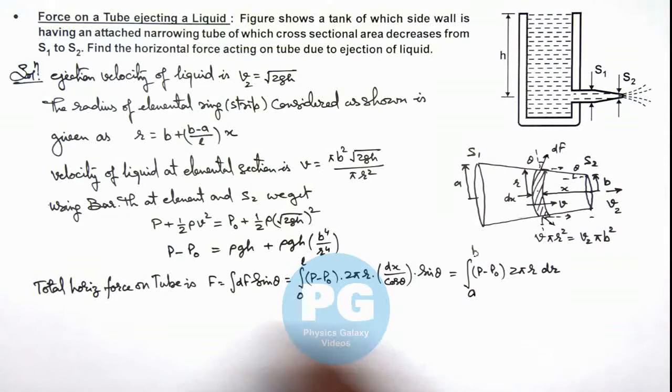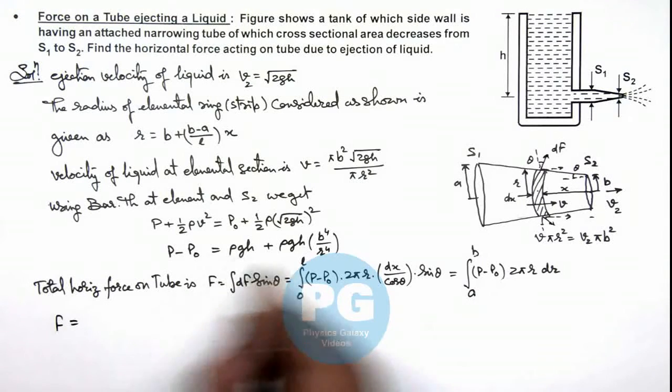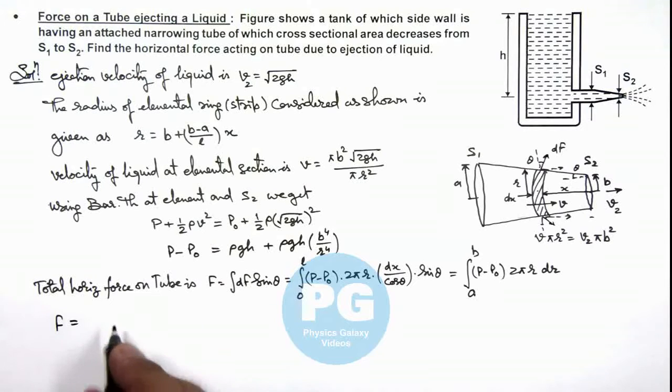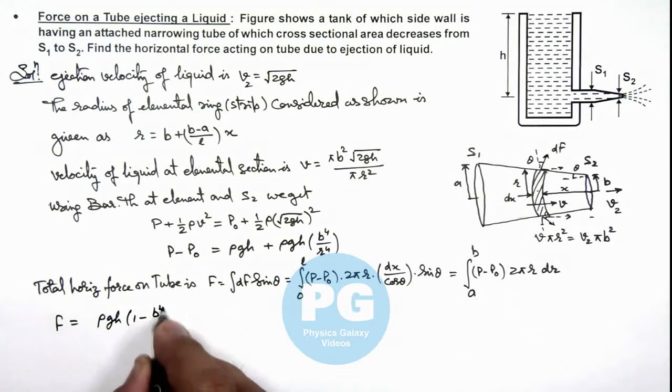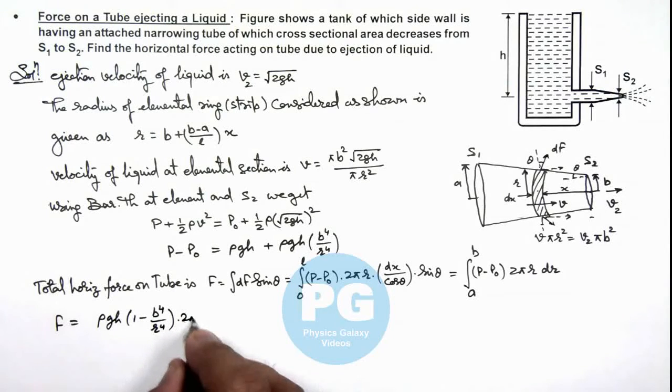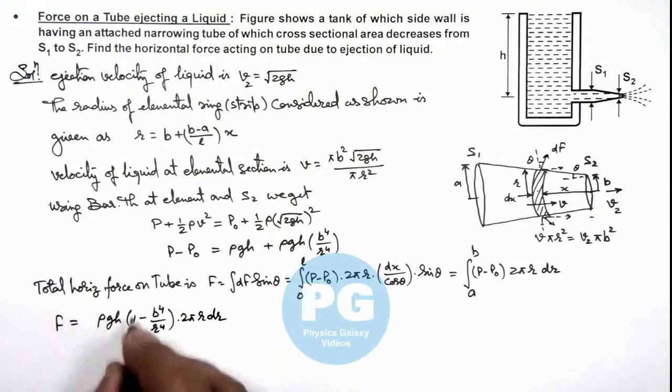So if we calculate this value of force, p - p₀ will substitute from here, which is ρgh(1 - b⁴/r⁴) multiplied by 2π·r·dr, and we integrate this term from a to b.